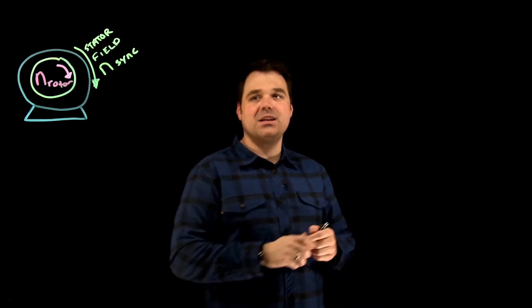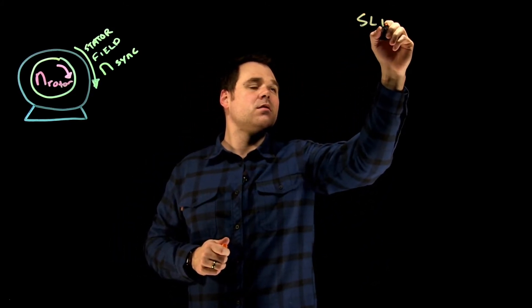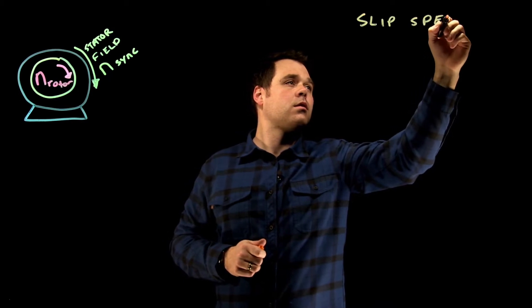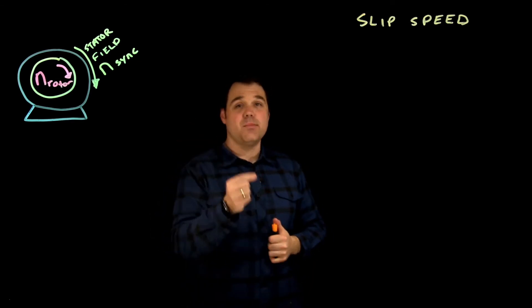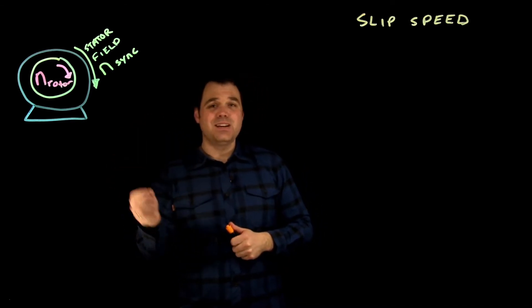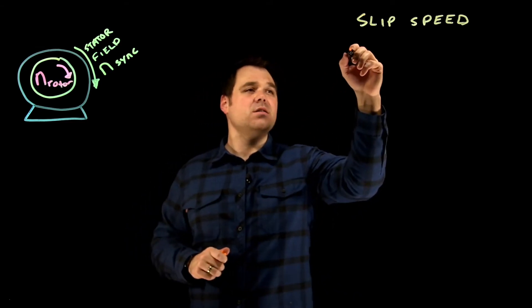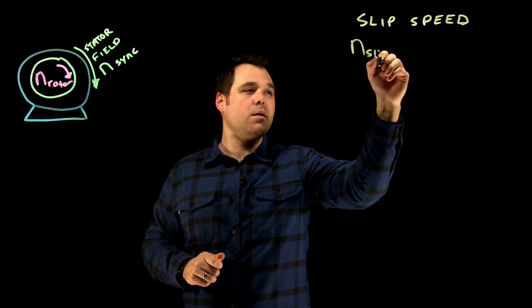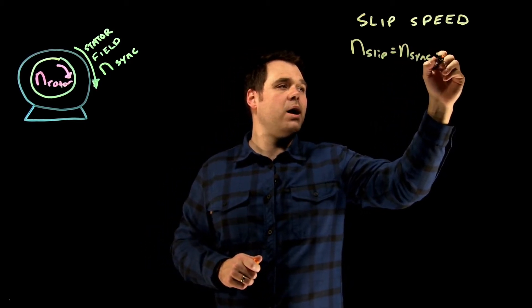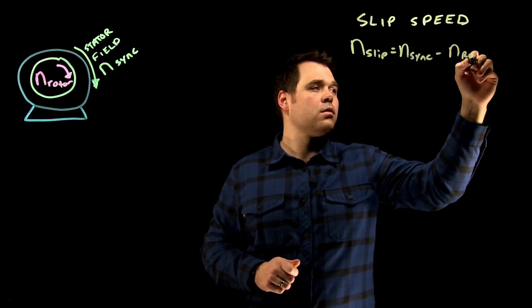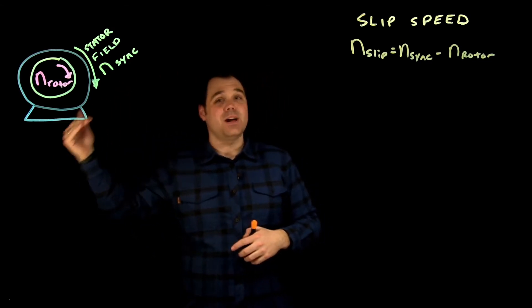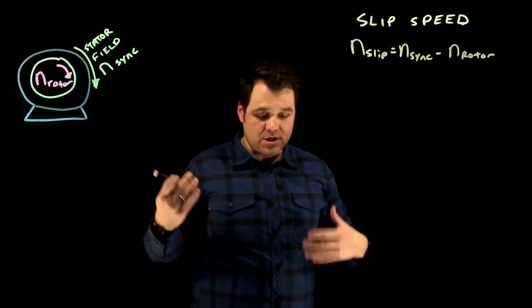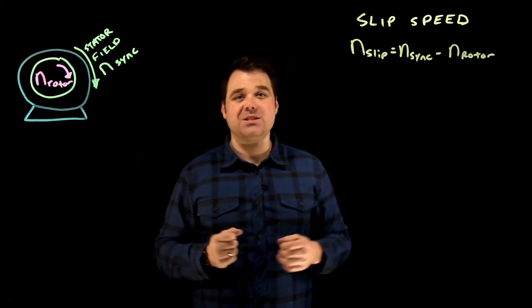We need to talk about slip speed. Slip speed is the difference in RPM — revolutions per minute — between synchronous speed and the rotor speed. So slip speed, which we would call N-slip, equals N-sync minus N-rotor. It's the actual difference in RPM between the stator and the rotor. Usually it's small, but it's going to be bigger depending on how much load is on that motor.